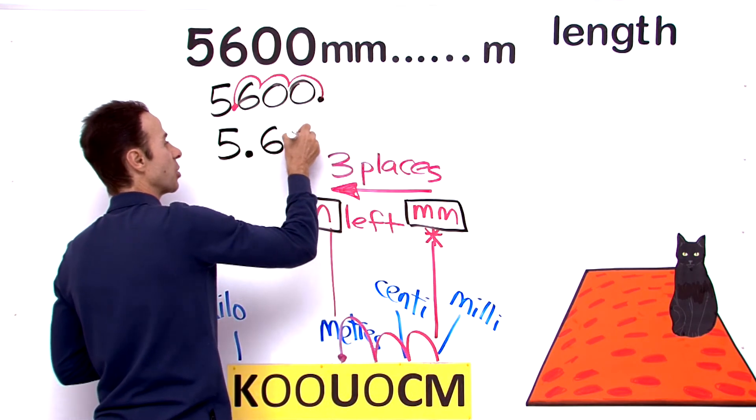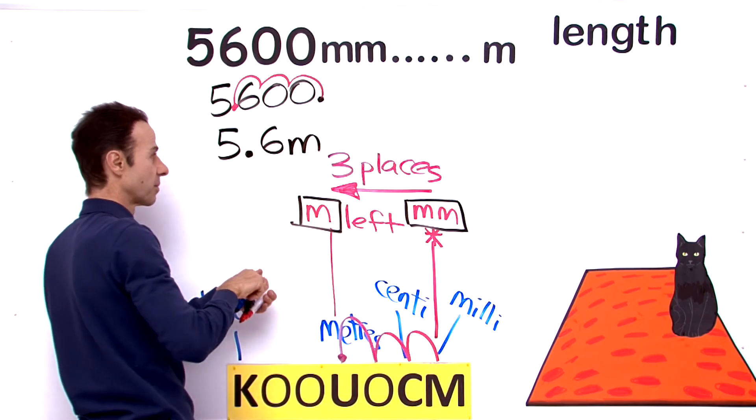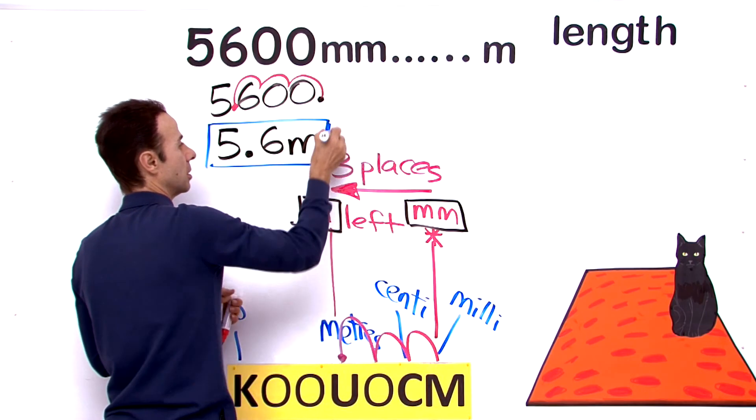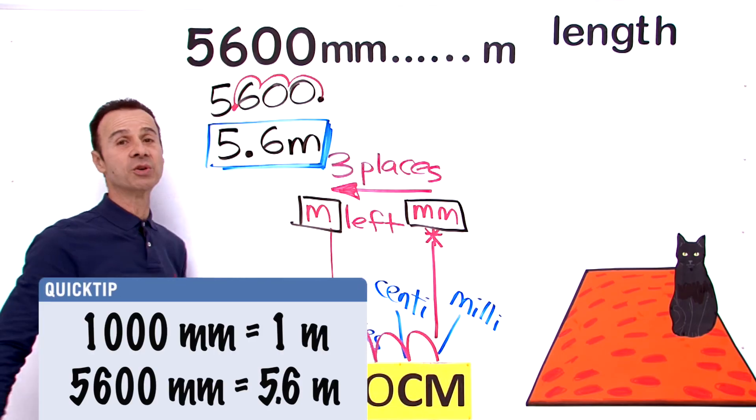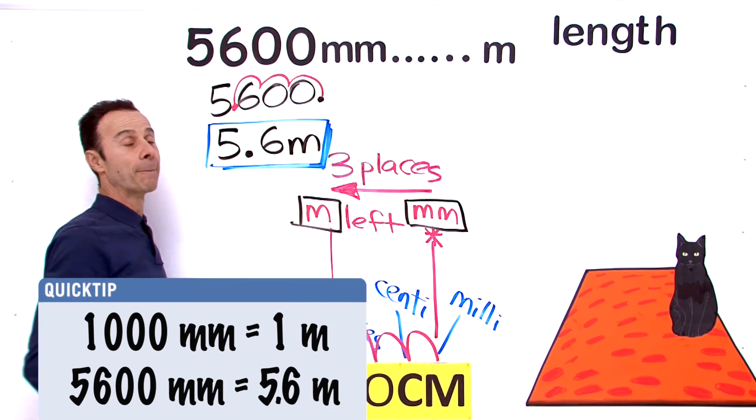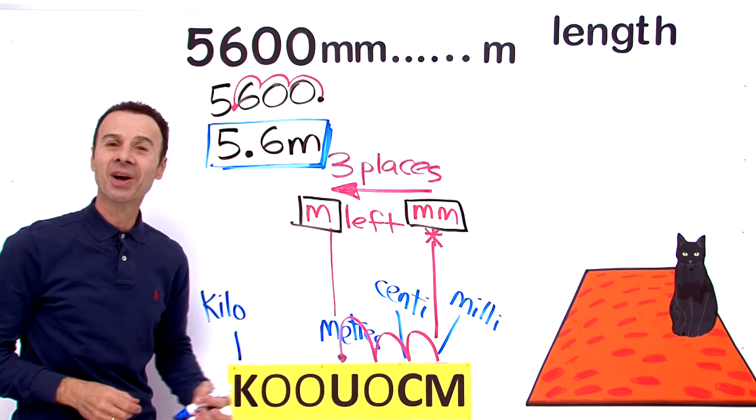5.6 meters, because we went to meters right there. See that? So 5,600 millimeters is equivalent to 5.6 meters. There you go. Hope that helps.